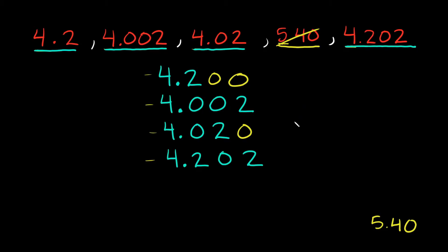Now we can start comparing. To list these from least to greatest we compare one place value at a time, starting in the ones place, then the tenths, then hundredths, then thousandths. In the ones place there's just a bunch of fours, so that doesn't help us. Moving to the tenths place: we have a 2, a 0, a 0, and a 2 — so the two with zeros in the tenths place are going to be the smallest.